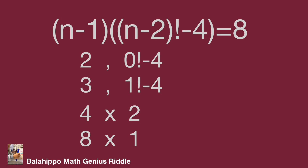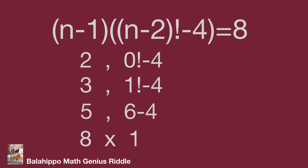In the 4 times 2 group, n equals 5. Then (n minus 2) factorial minus 4 equals 3 factorial minus 4 equals 6 minus 4 equals 2. This meets the criteria. For the last group, 8 times 1, n equals 9. The second quantity becomes 7 factorial minus 4, which does not equal 1 and is not the answer. So finally, n equals 5 is the correct answer.